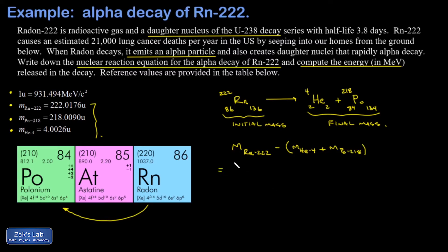This time I'm going to compute the missing mass in atomic mass units and then convert to MeV per c squared at the end. Notice in this first term that includes 86 electrons, but then in these parentheses that includes two electrons for the helium and 84 for the polonium, so the electron masses just cancel out.